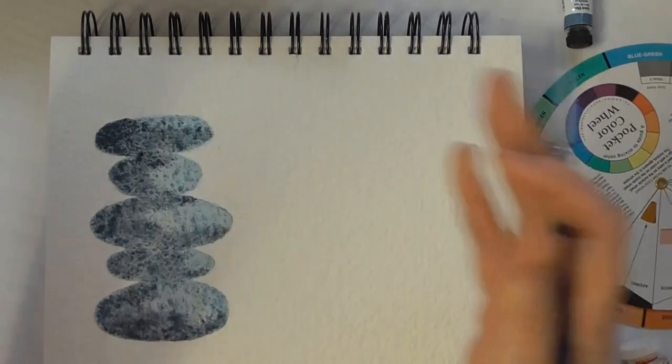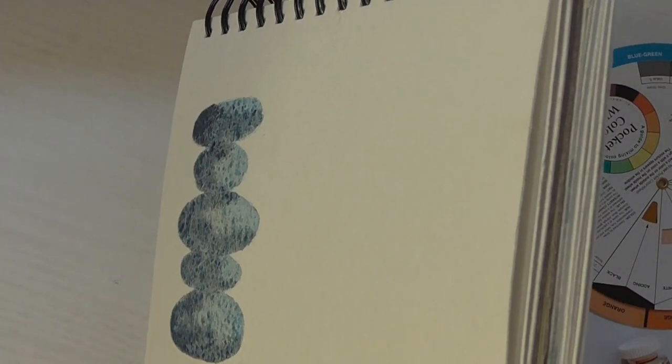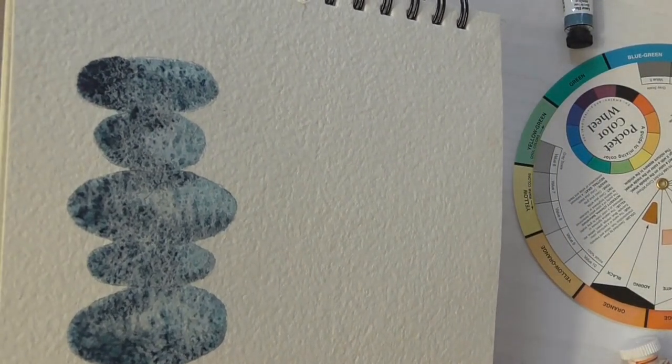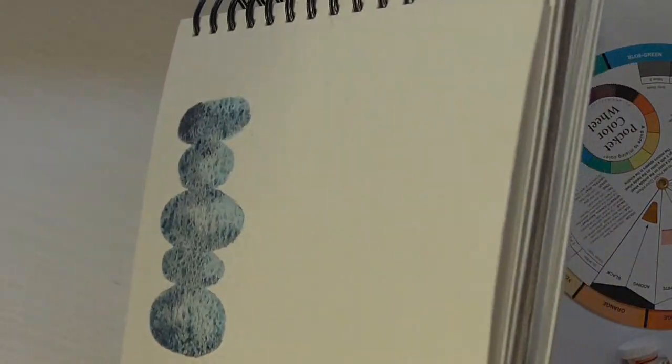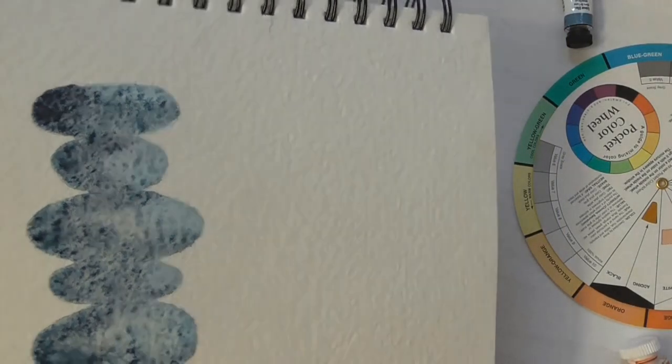Now you can see the pebbles are starting to have a bit of form in them. Again, I'm just going to tip them from side to side, from left to right, just to help distribute the color around evenly and naturally without using my brush, and I won't leave any brush strokes.